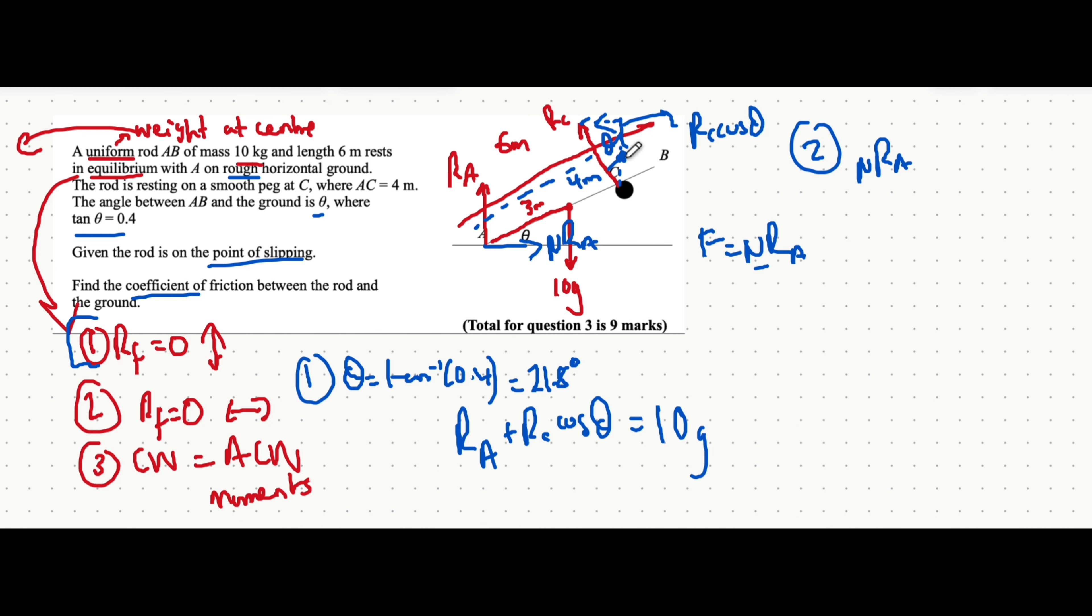The component that doesn't touch the angle is sine. But that's acting to the left. So all the forces to the right, which is friction, is equal to all the forces to the left, which is R_C sine theta.